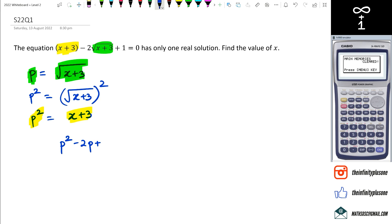Plus 1 is equal to 0. So at this point, let's just factorize it. So we're going to go p minus 1, p minus 1 is equal to 0. P minus 1 is equal to 0, therefore we can say that p is equal to 1.